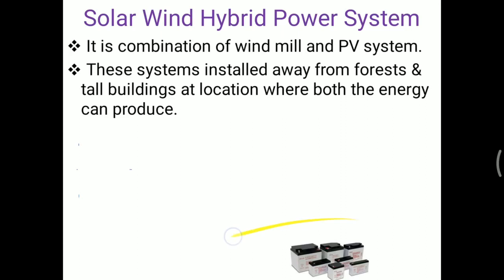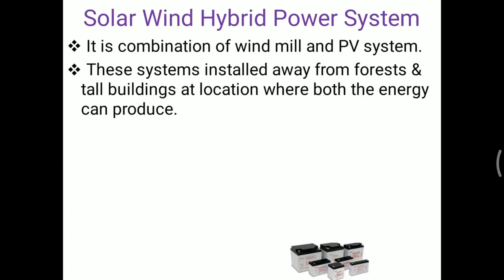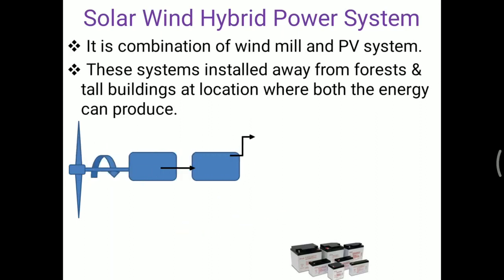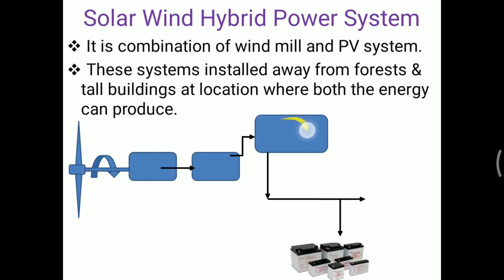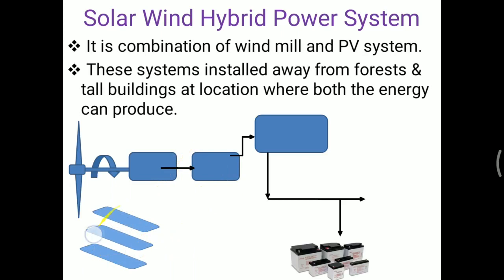After site selection, both systems are installed. In the line diagram, the first component is wind blades. When air strikes the wind blades, they rotate. Through a gearbox, the speed changes and mechanical energy is converted. Through the generator, AC supply is produced. The AC supply goes through a rectifier which converts AC to DC supply, and this wind energy supply is generated.